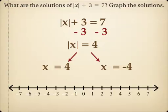To graph the solutions, we plot these points on a number line. Notice I'm not going to shade in any one direction, because this is not an inequality — it just says x equals 4 and x equals negative 4. So I just put points at 4 and negative 4 on the number line.